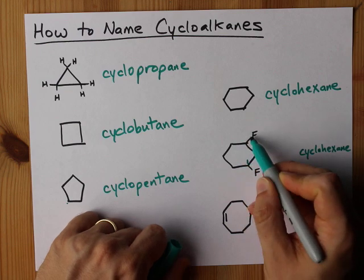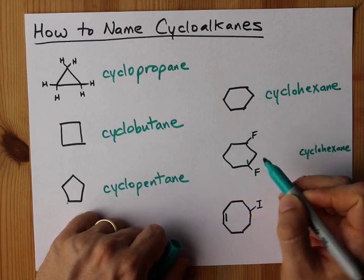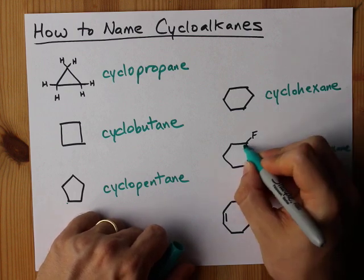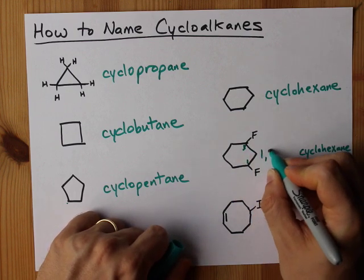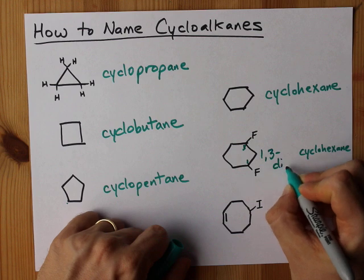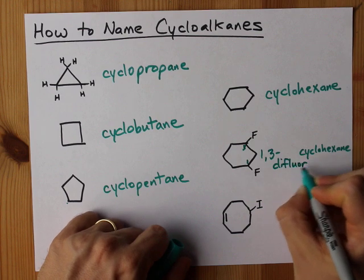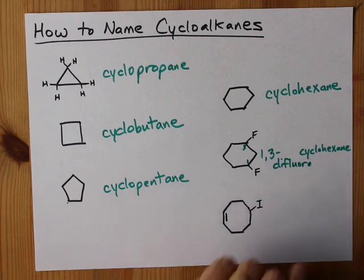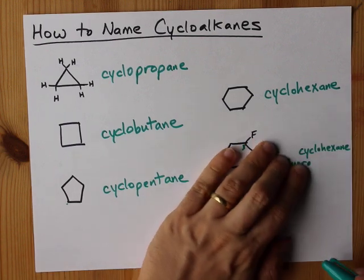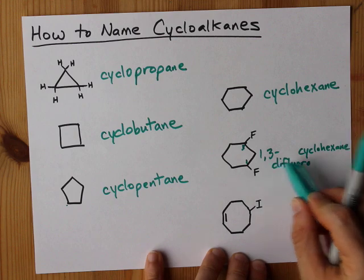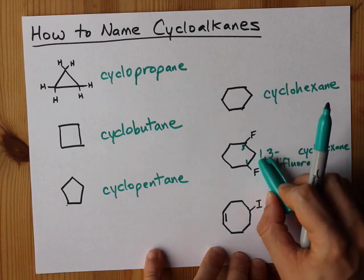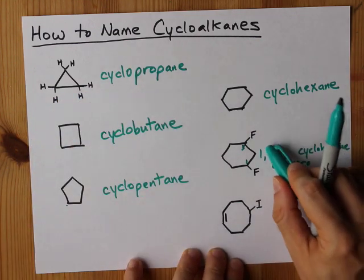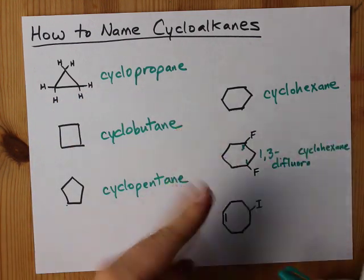If I go around this way, that fluorine is on carbon two, three, four, five. If I go around this way it's two, three. Three is lower, so I'm going to call this 1,3-difluorocyclohexane. Note that the U comes before the O. One, three, difluoro, cyclohexane. It's the same root of cyclohexane but it shows we have two fluorines — one on the first carbon of the ring, and another one two carbons away at carbon three.